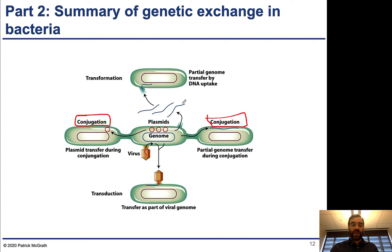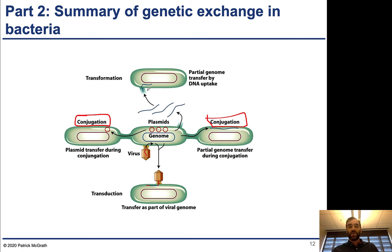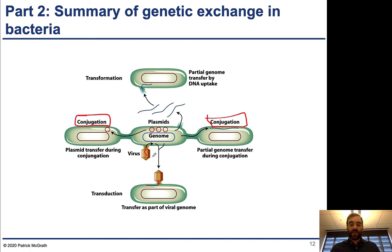Transformation is when free DNA is taken up by the cell. A cell might lyse and release the contents of its cytoplasm, including pieces of DNA. Those DNA pieces float in the environment, and another cell might take them up and use that DNA material if it encodes something useful, exchanging it with its chromosome. Finally, viruses — bacteriophages that infect bacterial cells — can in some cases package parts of the bacterial DNA into the viral head, and when infecting a new cell, inject bacterial genome rather than viral genome. This is another method of exchange.